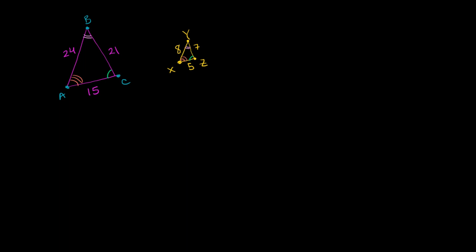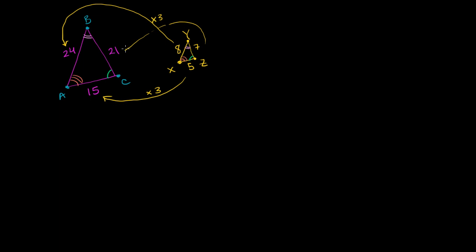We also see that the sides are just scaled up versions of each other. To go from the length of XZ to AC, we multiply by 3. To go from the length of XY to the length of AB — the corresponding side — we multiply by 3. And to go from the length of YZ to the length of BC, we also multiplied by 3. So essentially, triangle ABC is just a scaled up version of triangle XYZ.